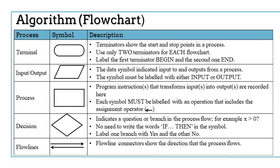A decision indicates a question or a branch in the process flow. For example, x is greater than zero. No need to write the words if or then in the symbol. You're going to label one branch with yes and the other with no. Again, this is only required if there's a decision to be made.